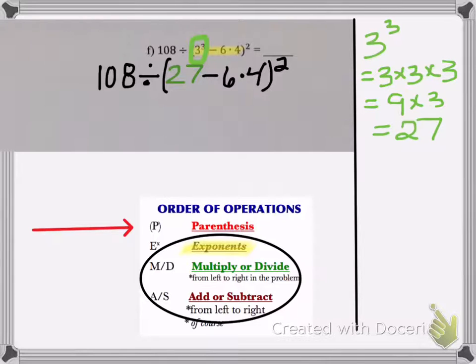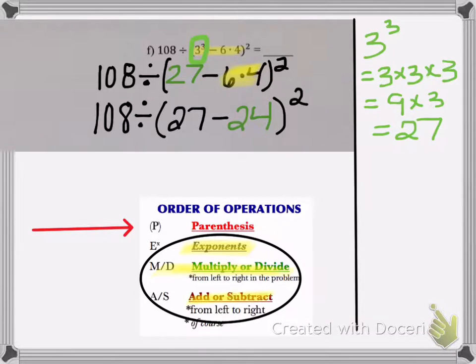Multiplication or division comes next. So 6 times 4 is my next step. Now, I'm still inside my parentheses. I still have subtraction to do. So my next step is the 27 minus 24.